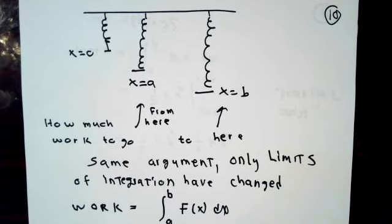If you didn't start from the natural length, if you started from some displacement from equilibrium at x equal a and ended at x equal b, the argument to calculate the amount of work needed is exactly the same as what we've done before.